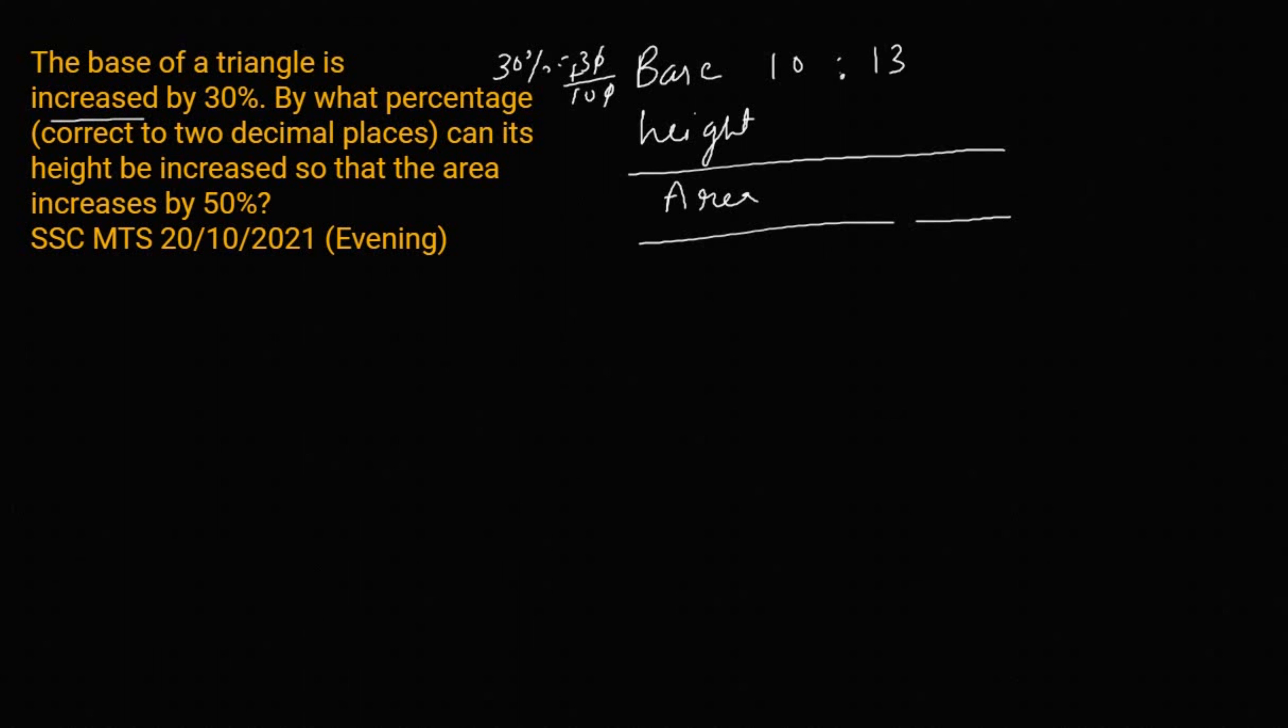We have asked about height, and we have information about area. The area increases by 50%. So, how much is 50%? 1 by 2. Increase by this, we will do this. How much is area? 2. After increasing, how much is it? 2 plus 1, that is 3.